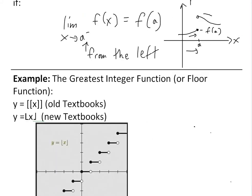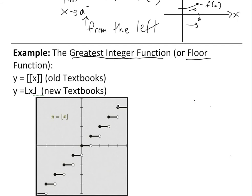Now to illustrate one-sided continuity, I'll look at the greatest integer function again. I've gone over it before in the continuity examples video and also in an earlier video on limits, so make sure to watch those linked below. This is also called the floor function, and the notation is y equals with either a double bracket or a special bracket with the bottom part — you'll see both in old and new textbooks.